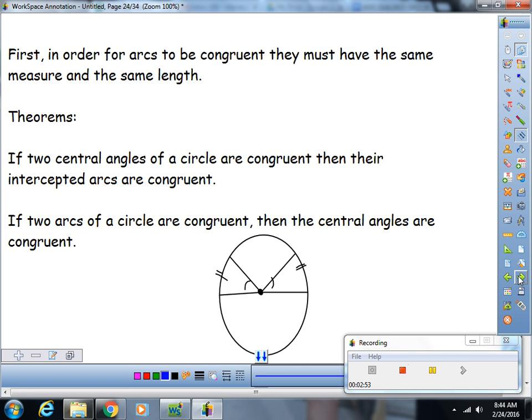So in order for arcs to be congruent, they don't only have to be the same measure, but they also have to be the same length, which means they've got to come from the same circle or congruent circles. Bless you. And then the rest of this lesson is just six theorems, but really it's just three theorems with their converses. So here's your first one.